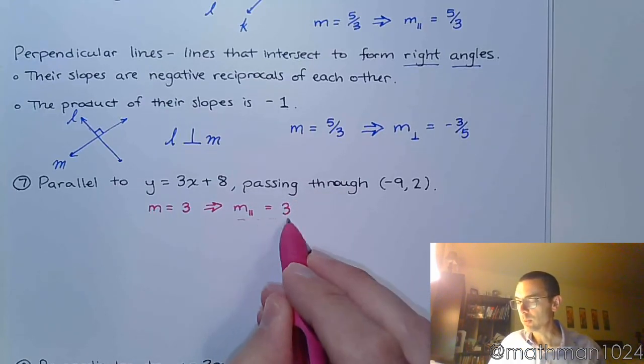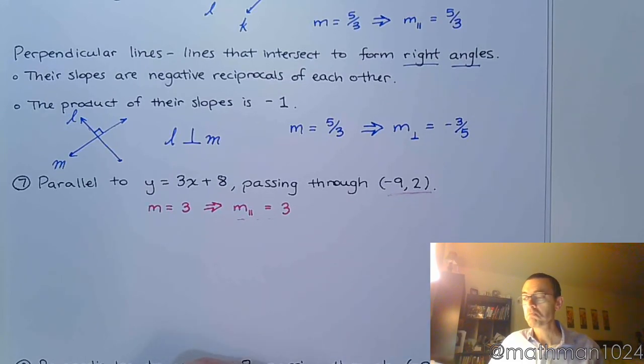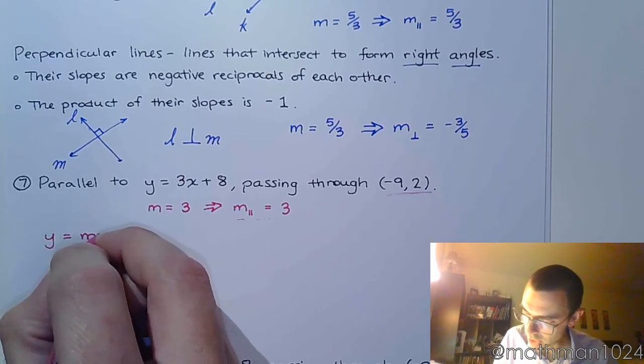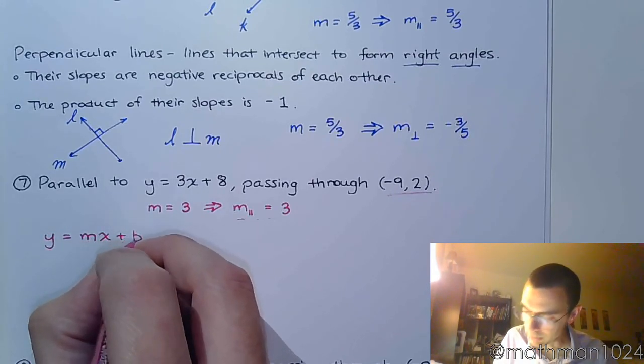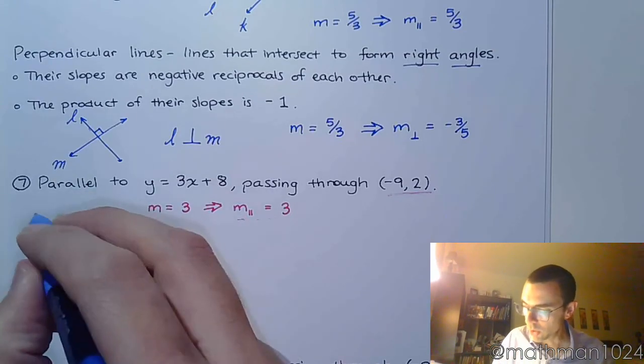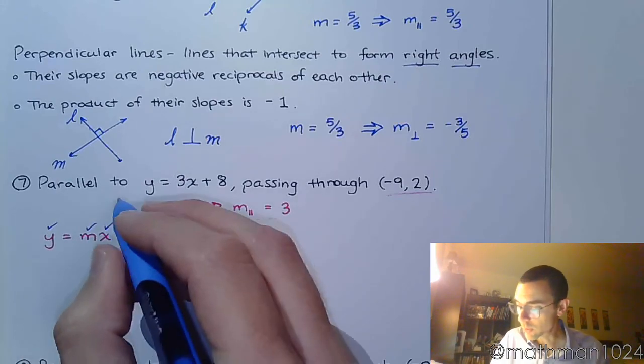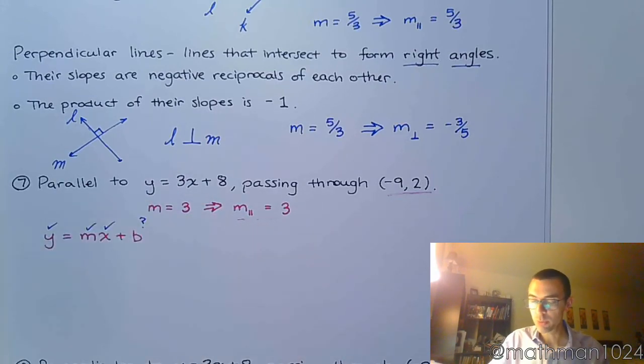So now you've got a slope, and you've got a point that you go through. So based on the other videos we've seen in this section, we know that we can jump straight into this. y equals mx plus b. You know your slope. You know the x and y coordinates for a point that you're going through. You just don't know your b value.